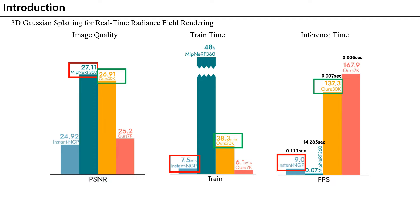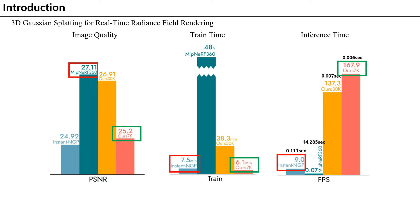Going back to Gaussian Splatting and looking at the 30K iteration model: it has similar quality to MipNeRF 360, trains in 38 minutes on 1 A6000, and renders in real-time at 7ms. Looking at the 7K model, the quality is higher than Instant NGP but the train speed is faster. Above all, it renders in real-time at 6ms. Since it is 6 to 7ms on the A6000 GPU, real-time rendering that does not exceed 1 second is possible even on a regular GPU.